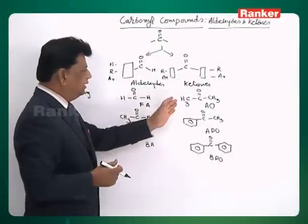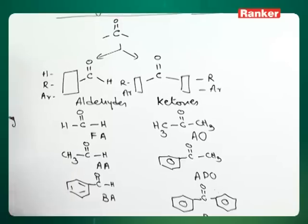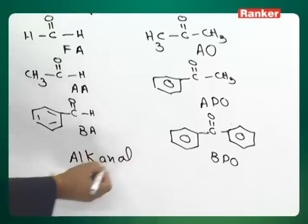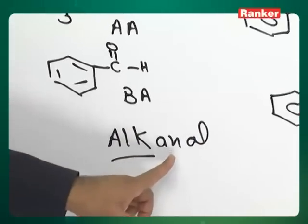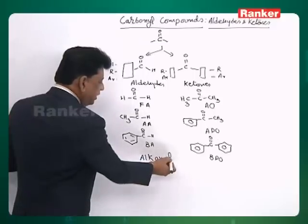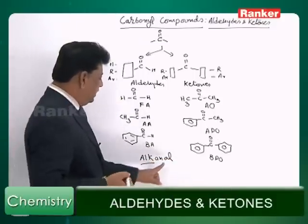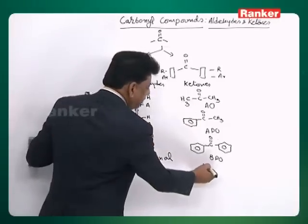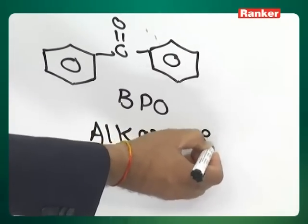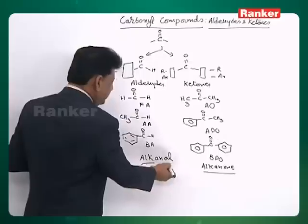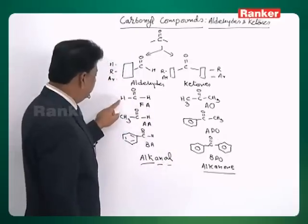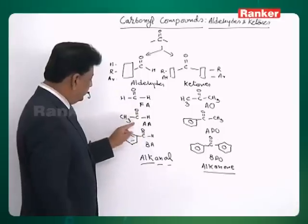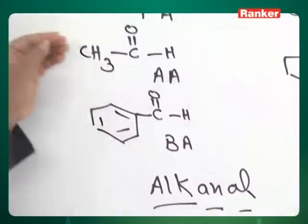Systematically, aldehydes are called alkanal — 'alk' represents the number of carbons, 'an' indicates saturation. If double bonds are present, you go to 'enal' and so on. The suffix 'al' codes the aldehyde functional group. Applying IUPAC nomenclature: one carbon is methanal, two carbons is ethanal, three carbons is propanal, and so on.